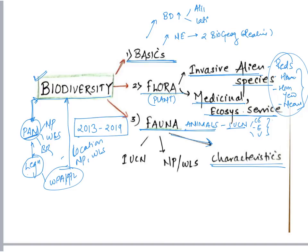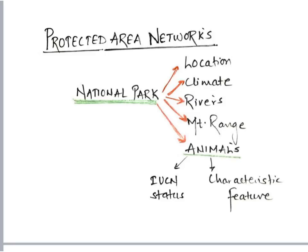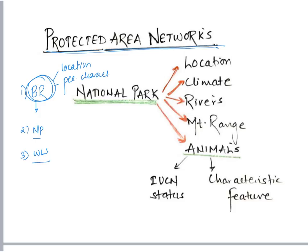This biodiversity topic should be studied along with the protected area network topic — national parks, wildlife sanctuaries, biosphere reserves — and the legislation related to it, that is Wildlife Protection Act 1972. When dealing with protected area networks, first study what are the biosphere reserves in India, their location, peculiar characteristics, and the national parks and wildlife sanctuaries within them. When studying national parks, know where that national park is located — for example, Namdafa, Manas, Navra Valley, or Bhitarkanika. Are they at the confluence of any two rivers?